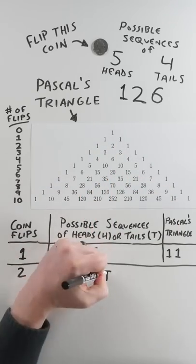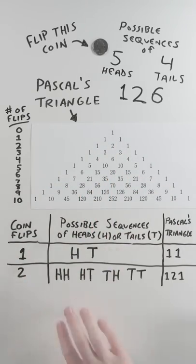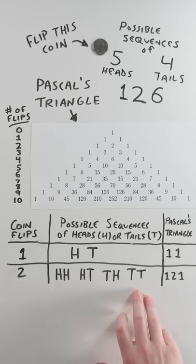With 2 coin flips, you can get 4 possible results. Head-head, head-tail, tail-head, tail-tail.